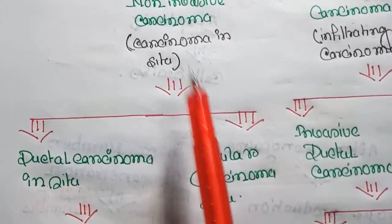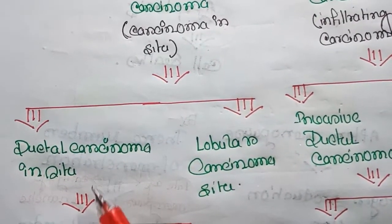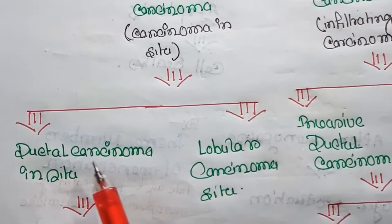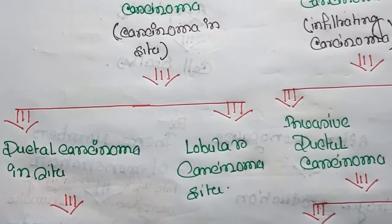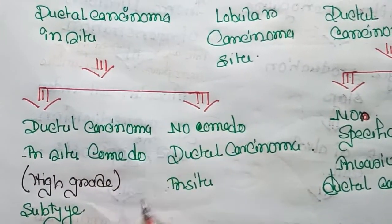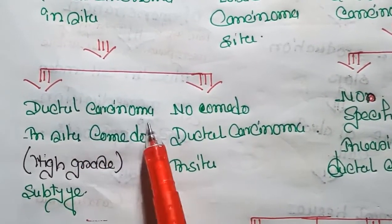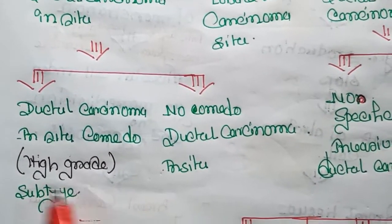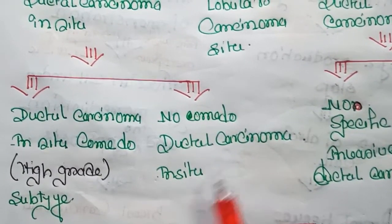Non-invasive carcinoma, or carcinoma in situ, is divided into two types: ductal carcinoma in situ and lobular carcinoma in situ. Ductal carcinoma in situ is further divided into two subtypes: ductal carcinoma in situ comedo subtype and non-comedo ductal carcinoma in situ.